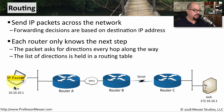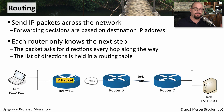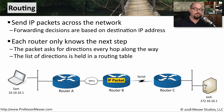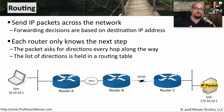Let's take the example of Sam sending an IP packet to Jack. There are a number of different routers between both of these networks. Sam sends the IP packet to her default router. This router looks at the destination IP address contained within the packet and compares that IP address to a list of routes in its routing table. When it determines what the next step is, it sends that packet out the next hop. The same process occurs on the next router down the line — the routing table is referenced, and the packet is sent out the appropriate interface. Finally, on the last router, the same thing occurs, and the packet is sent onto the interface that will get it closest to Jack's machine.